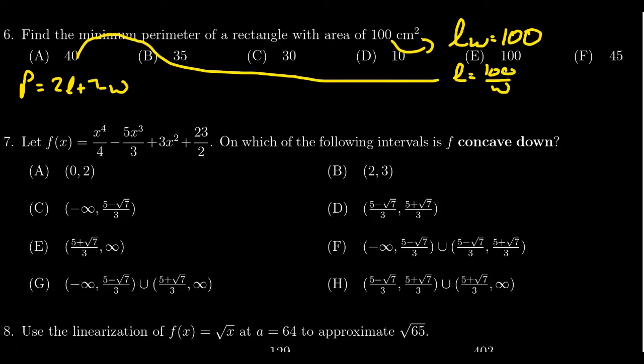So we're going to make that substitution so that the perimeter is equal to two times L, but L is 100 over W. And then we're going to get two times W, for which we can take two times 100. We end up with 200 times W to the negative one plus two W.